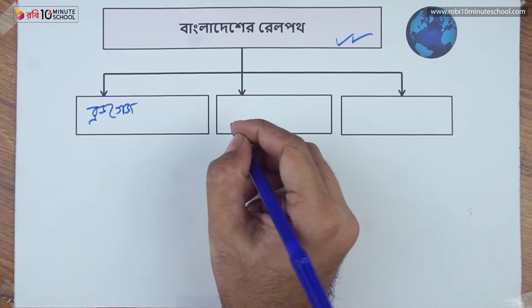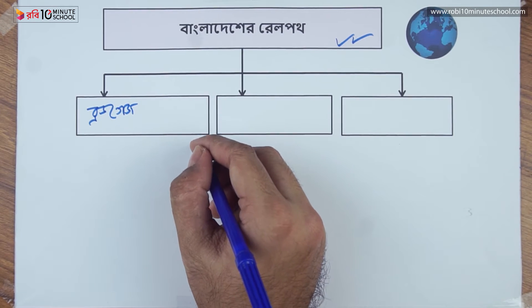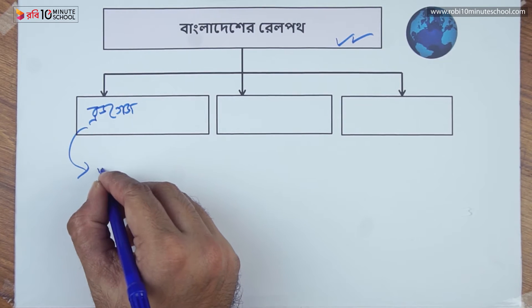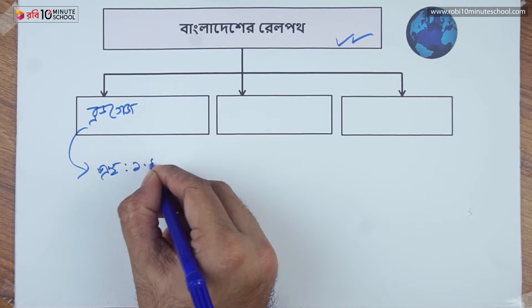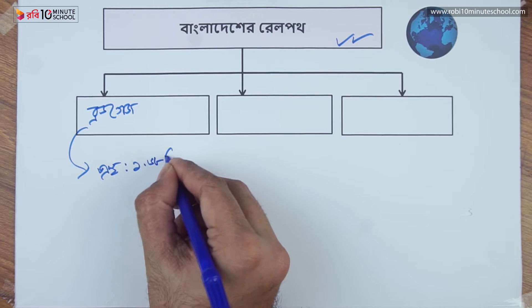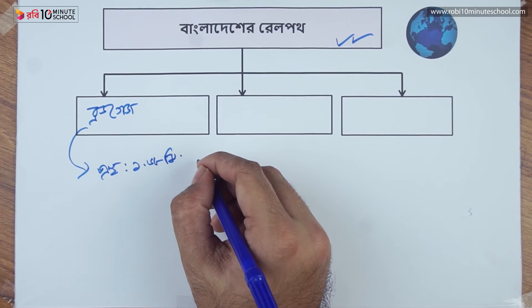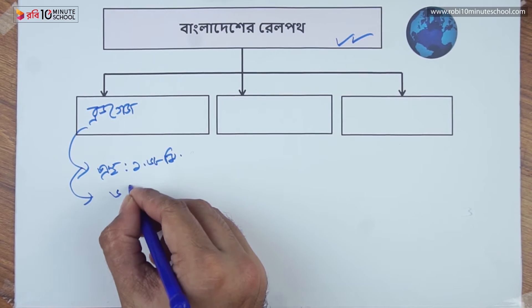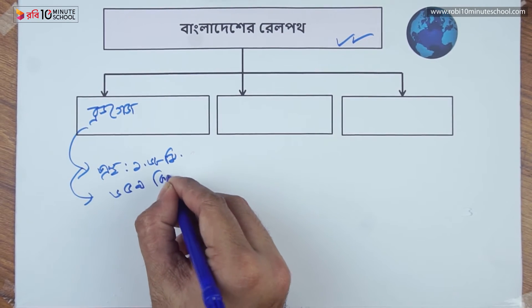The broad gauge rail path is 1.86 meters, and the broad gauge rail path covers 699 km.